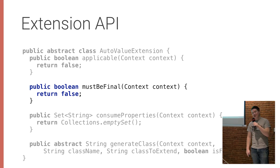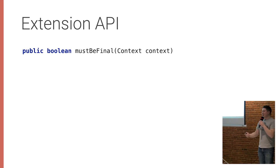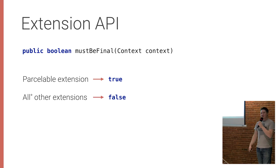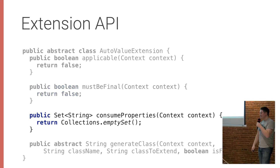The next method is mustBeFinal. I talked about how the Parcelable extension is generated at the top — it's the topmost class. The redacted one sits between the two. MustBeFinal basically controls that positioning. The only use case I know for returning true is Parcelable — otherwise just return false. Only one extension can be final, so if you're using Parcelable, that's it. AutoValue will sort the rest, so just return false from this if you're implementing one.